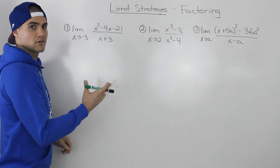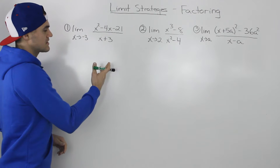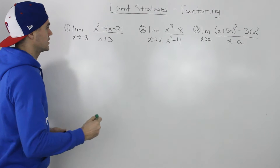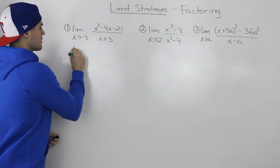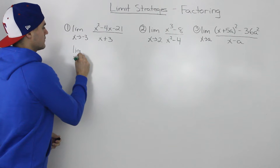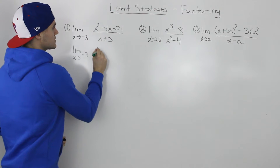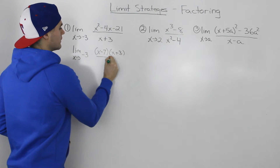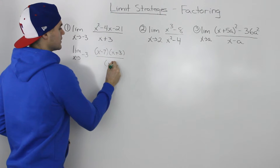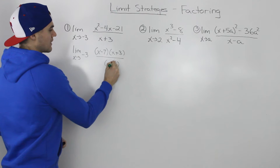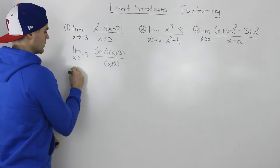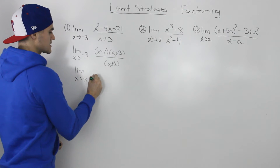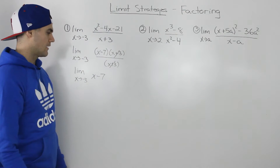So let's try to factor everything and see if anything cancels out, and then maybe make a direct substitution with that remaining expression. The numerator can factor into (x minus 7)(x plus 3), and it's still all over x plus 3. Now notice how the x plus 3's cancel out.